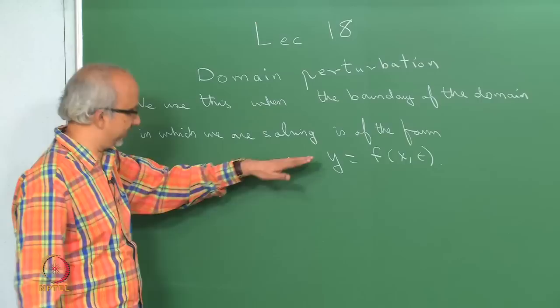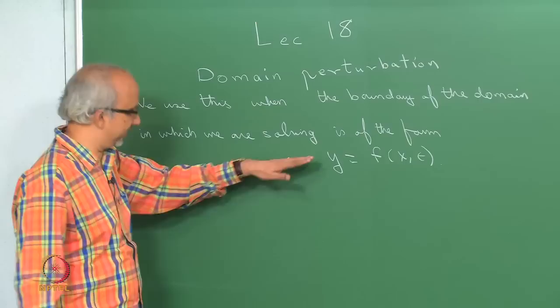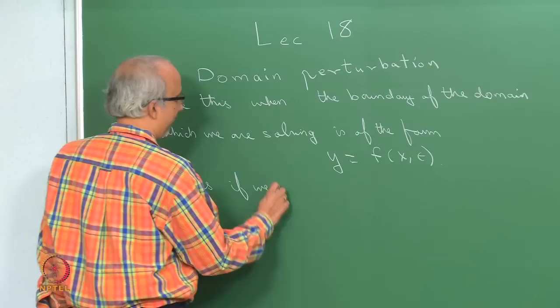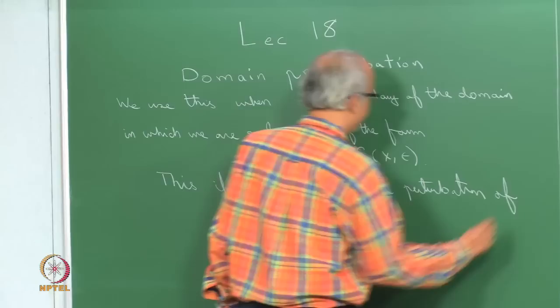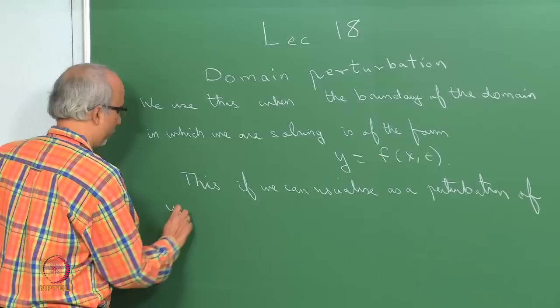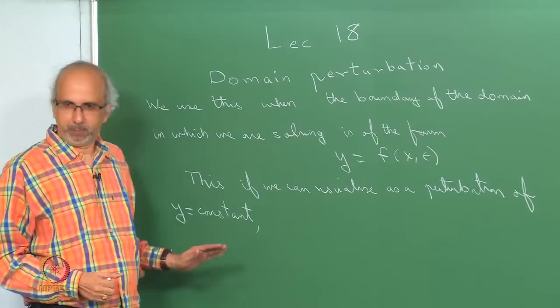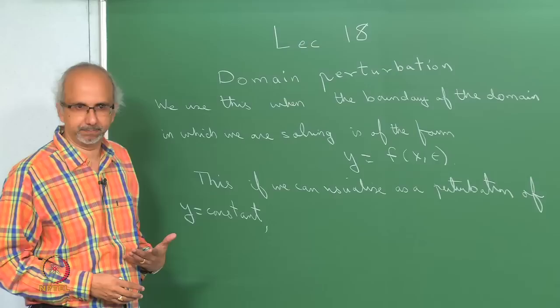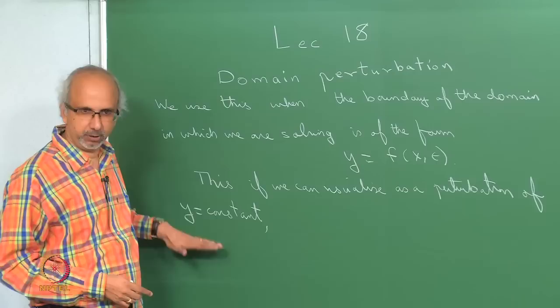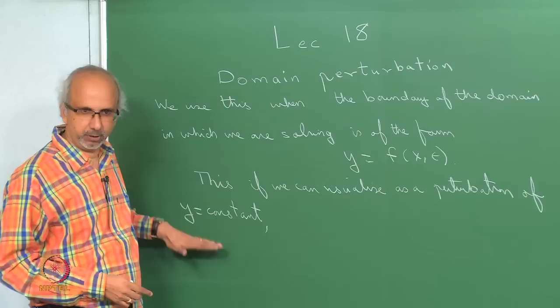What we are going to do is look at this surface. If we can visualize it as a perturbation of y equals constant, because you know how to solve problems where y is constant — that is the surface y equals 0 or y equals 1 — you know how to apply the boundary condition. So if this can be viewed as a perturbation of that kind of surface, we can possibly try to do a perturbation of the domain and then seek a solution. That is the idea.